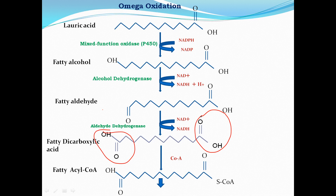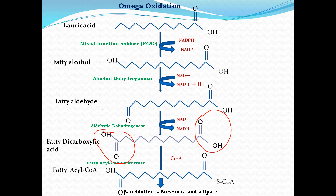From here, either end can be attached to coenzyme A. The fatty acyl coenzyme A attaches coenzyme A to the fatty dicarboxylic acid to form fatty acyl coenzyme A. From here onwards, beta oxidation takes place, and it can either yield succinic acid, which can enter the citric acid cycle, or it can also produce acetyl groups.